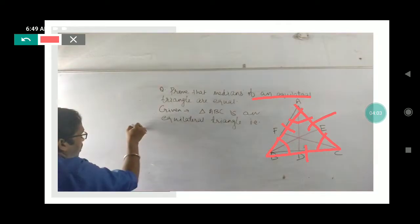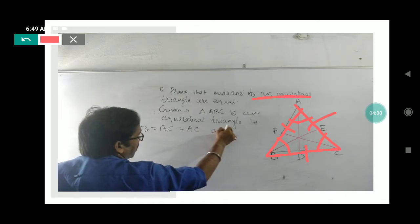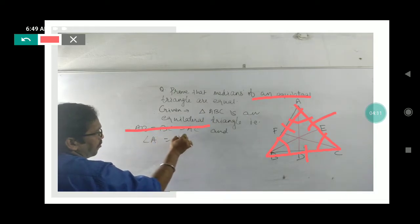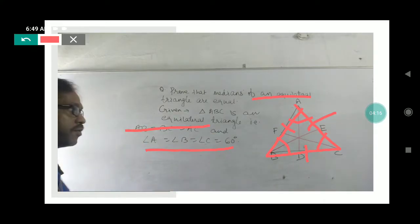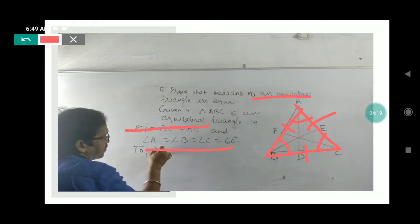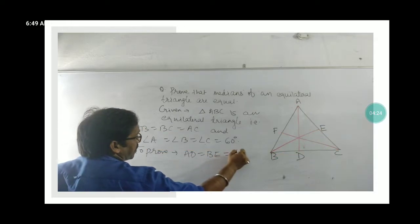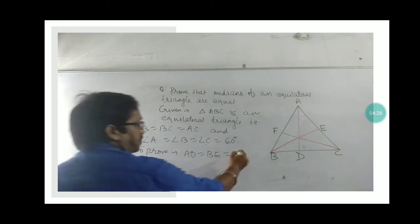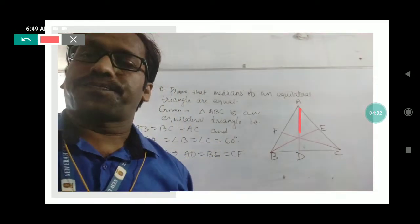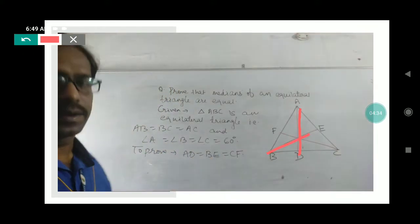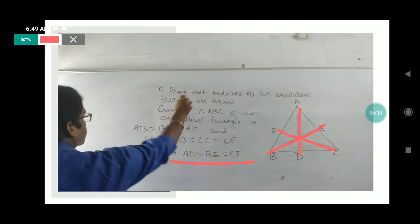On that basis we can say that AB equals AC equals BC, and angle A equals angle B equals angle C. So these two properties we have written. Now what we have to prove is that all three medians are equal — median one, median two, and median three. We have to prove that all three are equal.